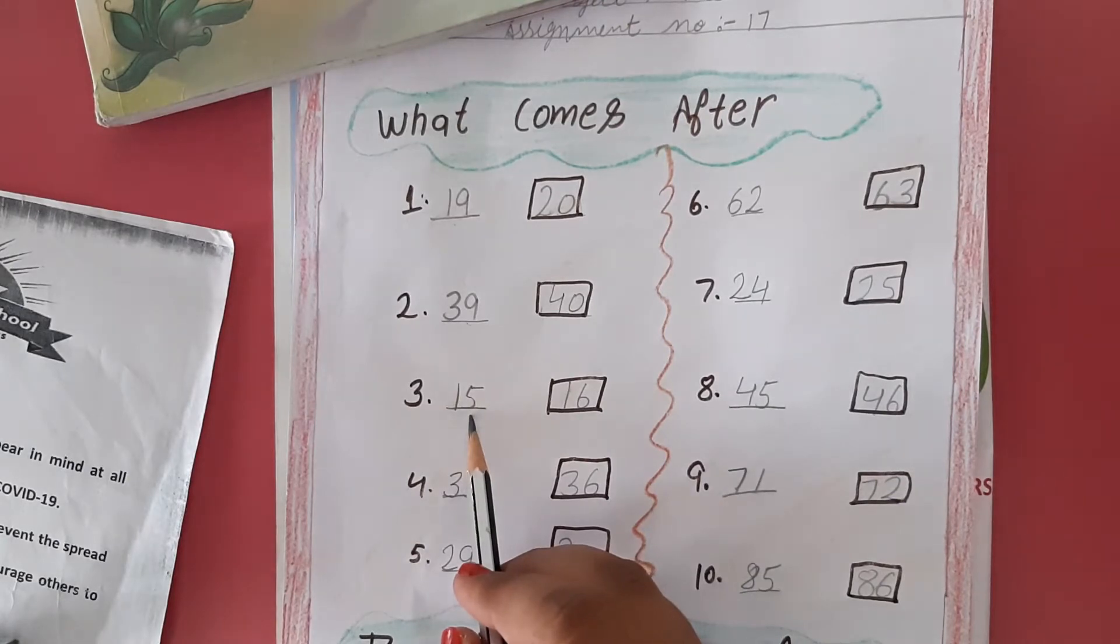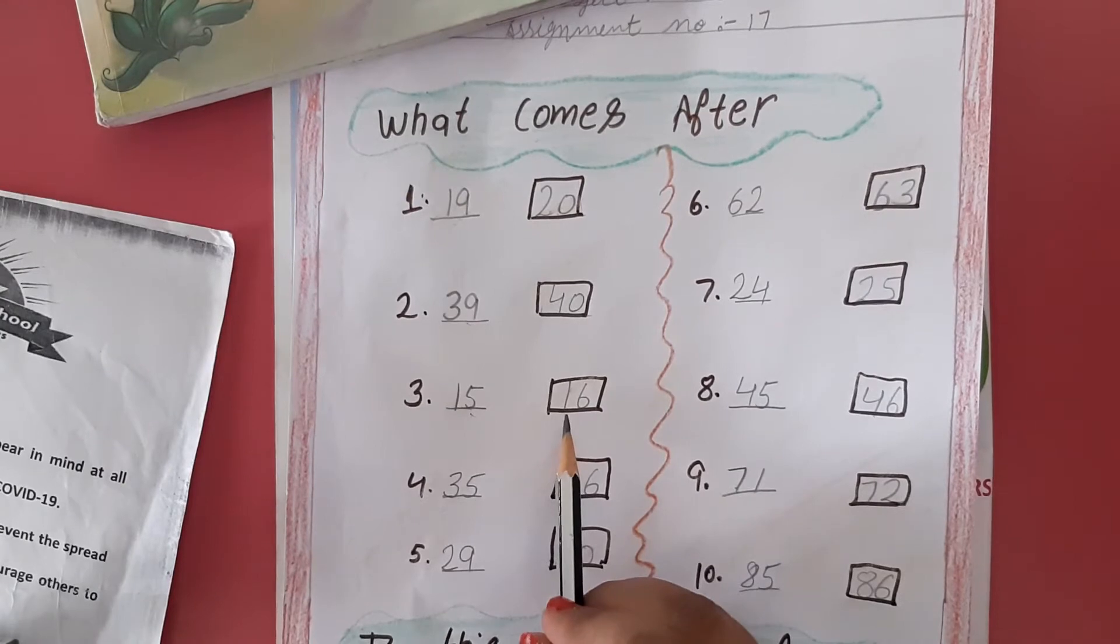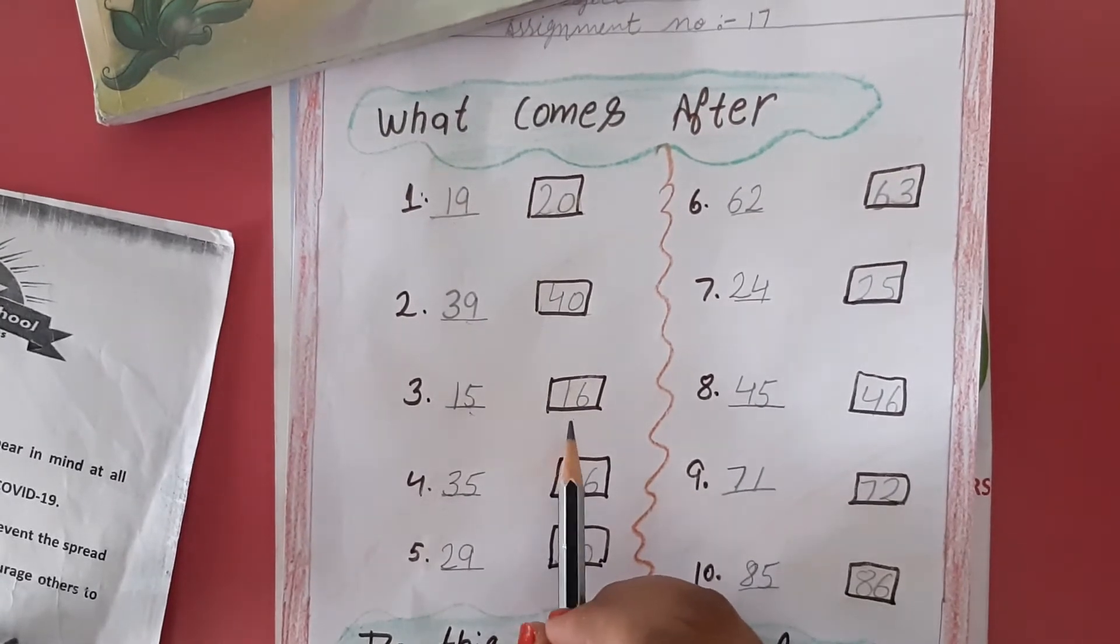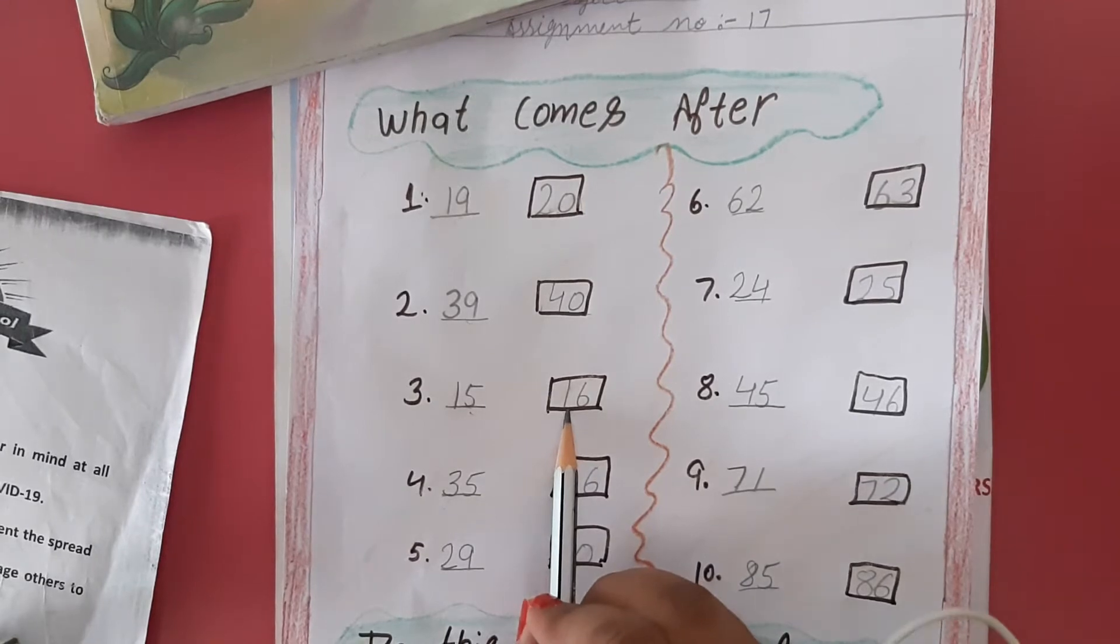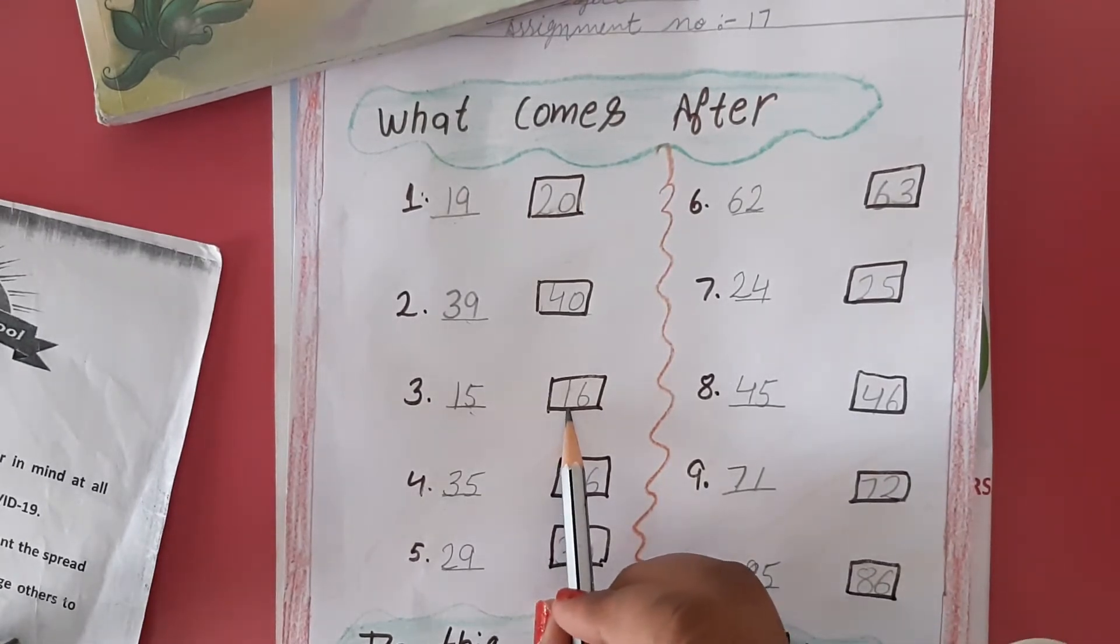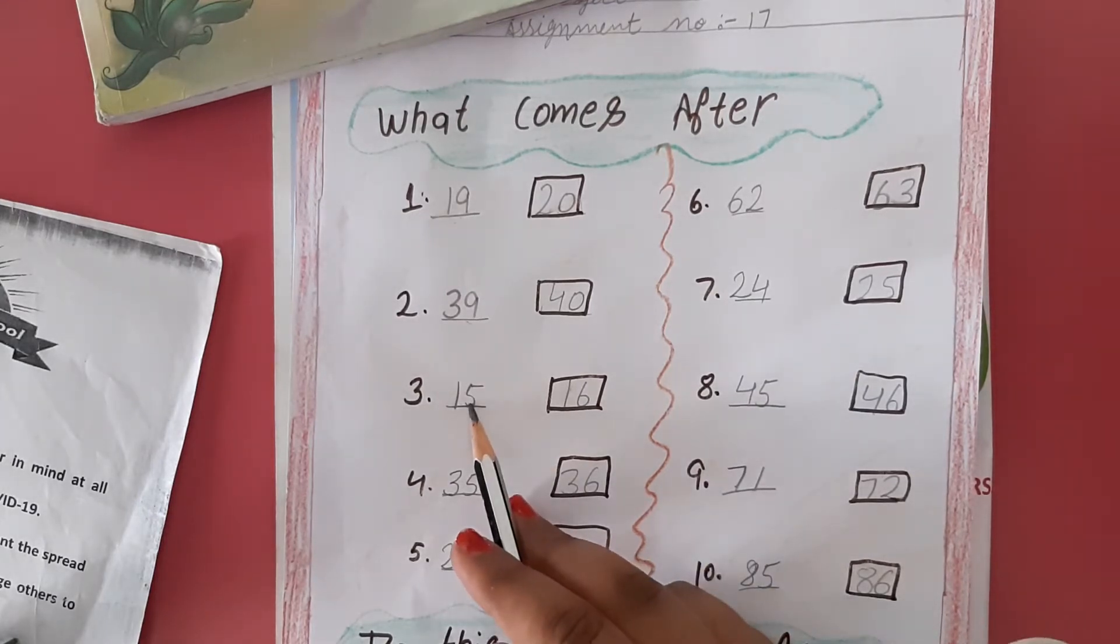Here, 15 is given. What comes after 15? That is 16. So we will write here 16.